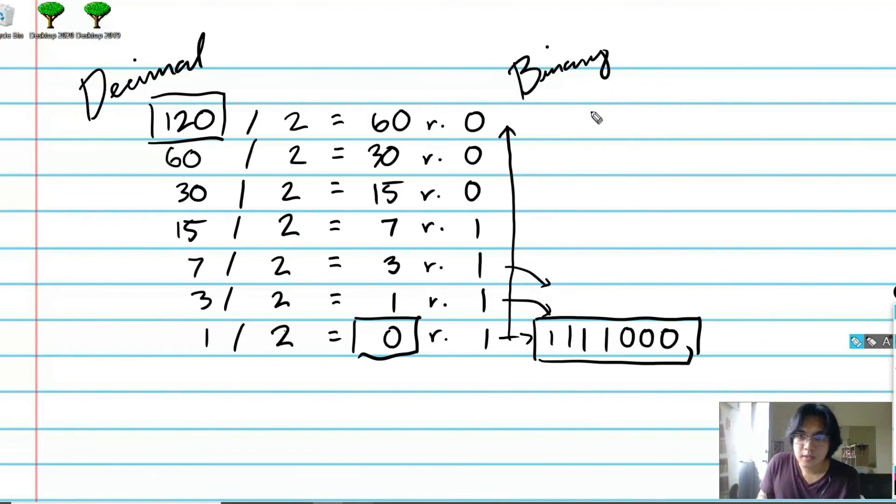write down the numbers, and we can enumerate from right to left the powers of 2. So this is 2 raised to 0, 2 raised to 1, 2 raised to 2, 2 raised to the 3rd power, 2 raised to the 4th power, 5th power, 6th power.